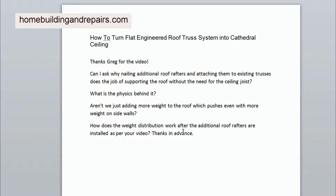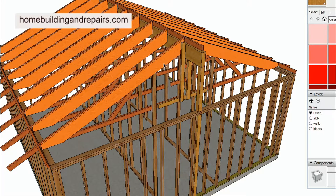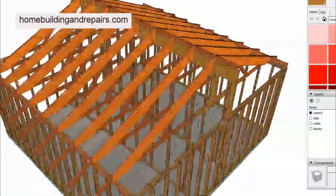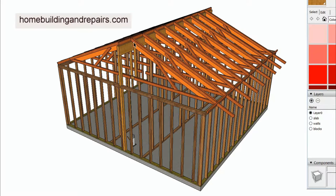The last question is: how does the weight distribution work after the additional rafters are installed? The weight distribution would go from the ridge beam — all the weight carried in that area comes down into the post and into the foundation. The weight on the rafter itself is distributed to the ridge and to the bottom. The weight of the rafter transfers to the beam, then down through the wall studs into the footing — that's how the weight is distributed.